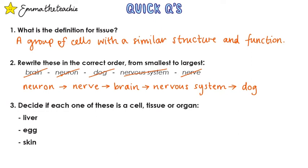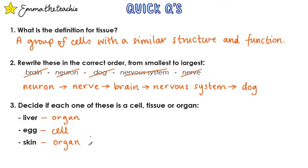Question three: decide if each one of these is a cell, tissue, or organ. The liver is an organ — it's part of the digestive system. The egg is a cell, part of the female reproductive system and made in the ovaries. And skin is also an organ — it's actually the largest organ in your body. Along with your hair and nails, it forms part of the integumentary system, but don't worry, that's not on the spec.